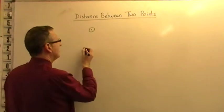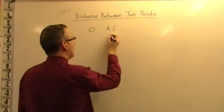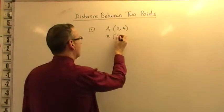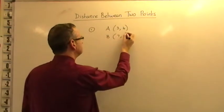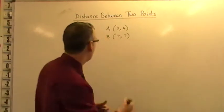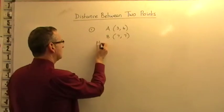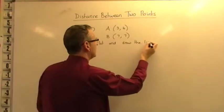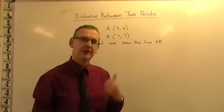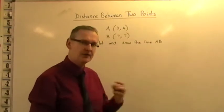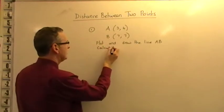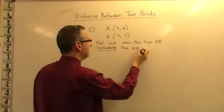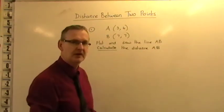So let's give you an example. If I say to you that we've got point A and it's got coordinates (3,4) and I've got a point B and its coordinates are (7,7). And the question might say plot and draw the line AB. So we're going to plot those points, join them up to get the line AB. And then the question will say calculate, notice it says calculate, not measure, calculate the distance A to B, which is AB.